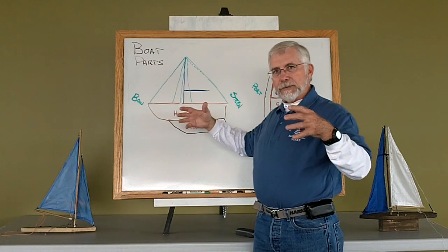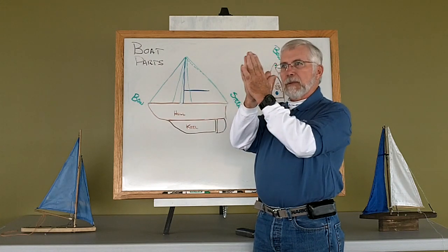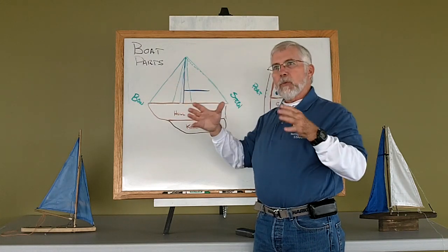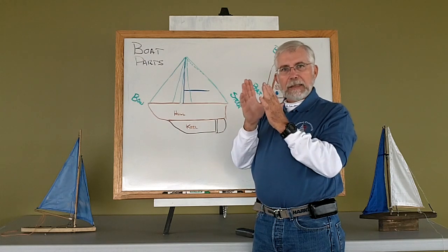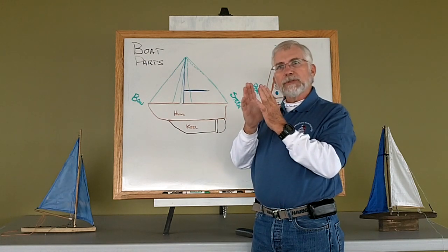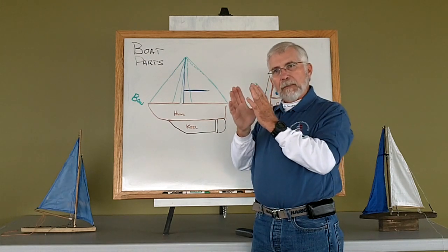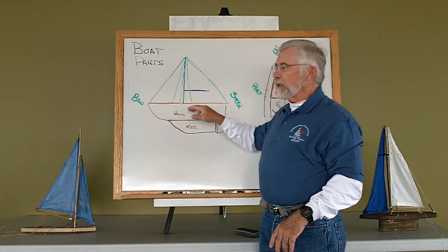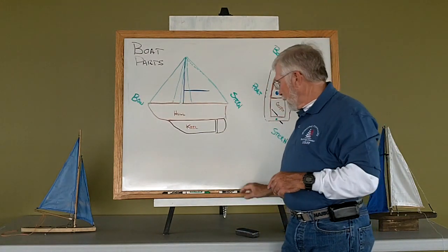These wire rope cables, once we stick the mast up, the wire rope cables are what keeps the mast standing and holds the loads that we put on the sails and the mast. And we refer to these as the standing rigging.